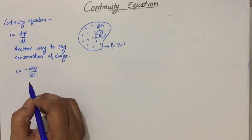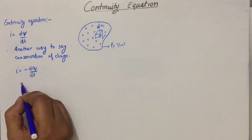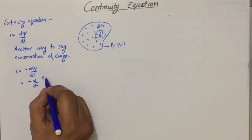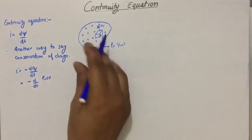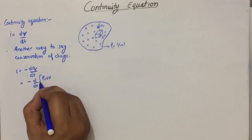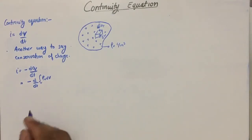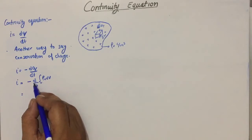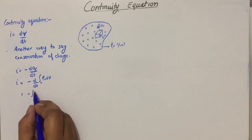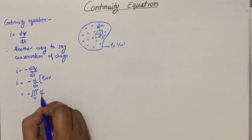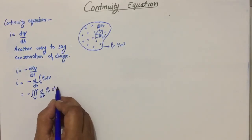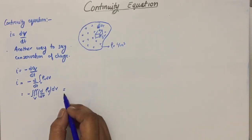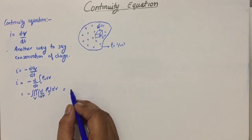The rate of change of charge can be negative due to the reduction in concentration inside. So we can write d/dt of Q for this differential volume, which can be written as ρv dv, and for the full volume it can be written as a volume integral. This is a simple operator so we can take it inside: volume integral of d/dt of ρv dv.